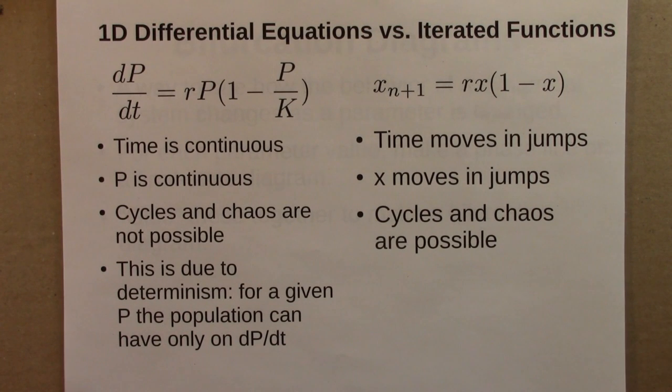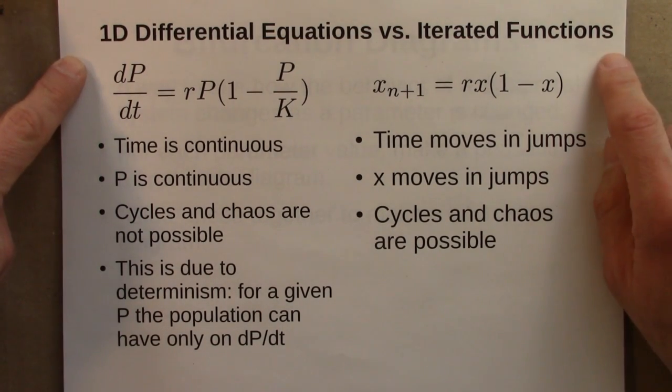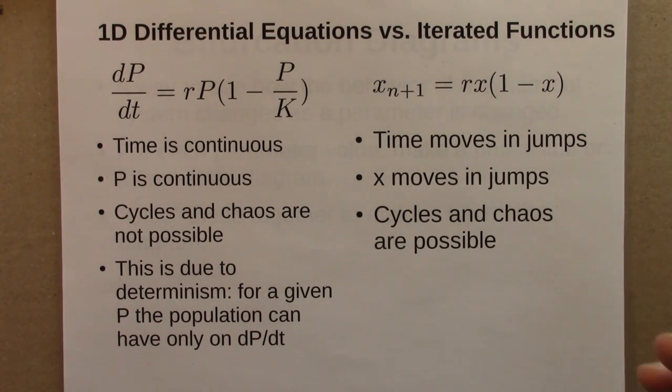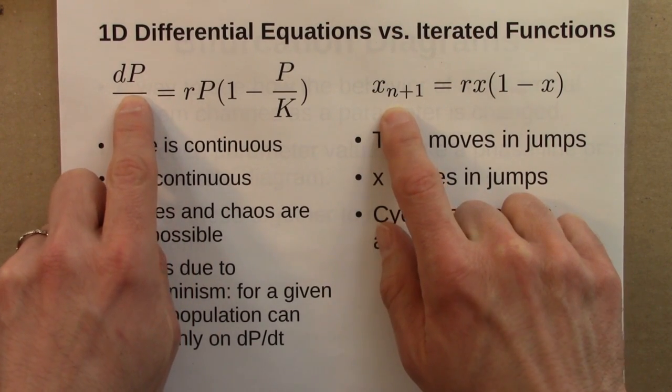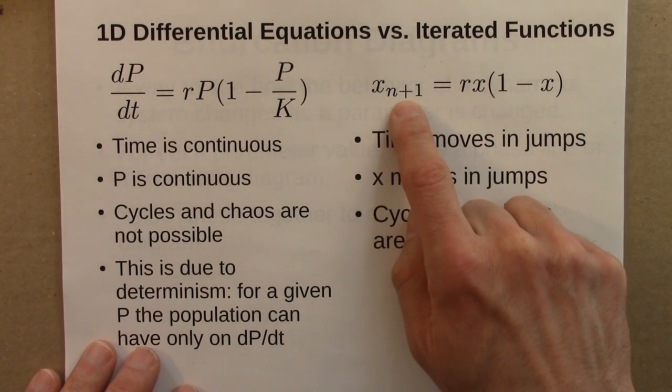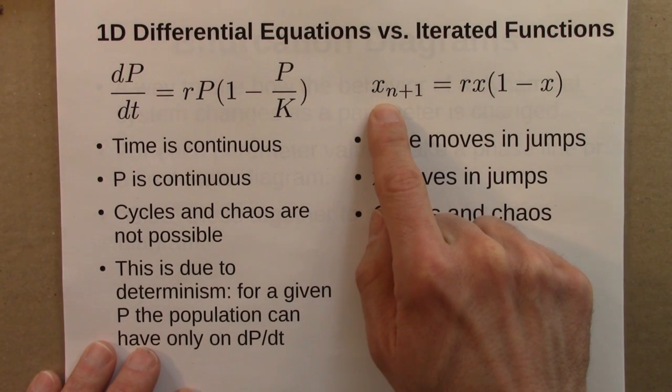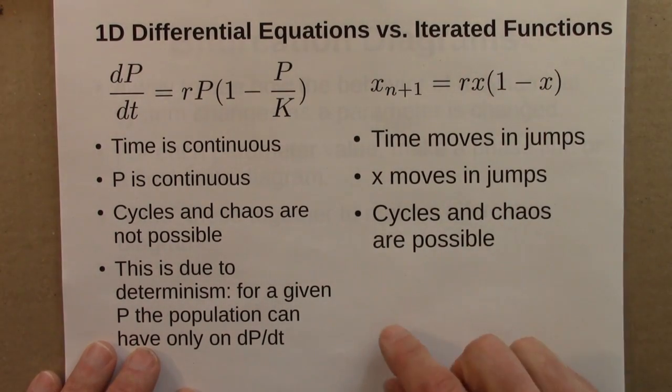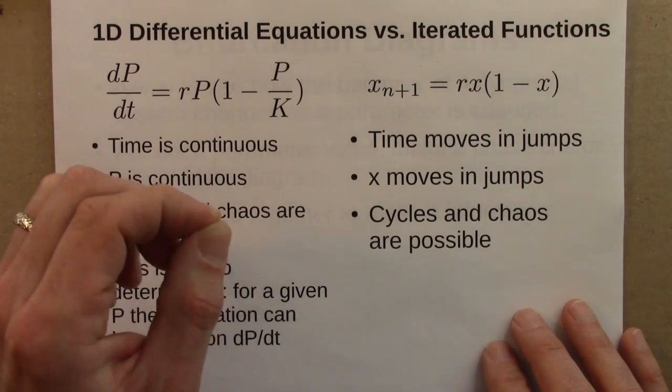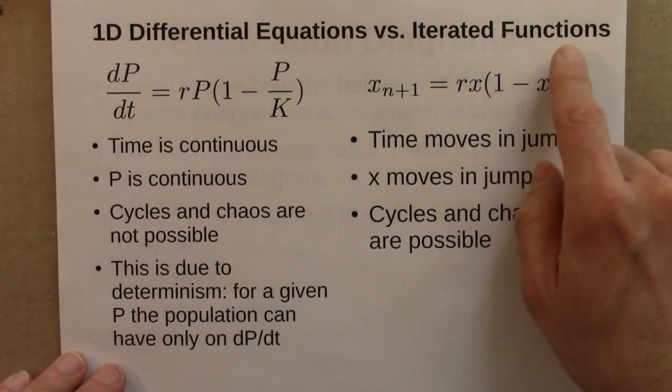Another point worth highlighting as we review and summarize is that we studied two types of dynamical systems: one dimensional differential equations and iterated functions. Although they're in some ways very similar, they're different and have some different mathematical properties that are important to note. For iterated functions, time moves in jumps. There's a value of x at step 1, at step 2, at step 3, but we don't really think about there being a value at time 1.2. Time moves in jumps, step 1, step 2, step 3, and x moves in jumps too. x could go from 0.6 to 0.4 and there's no sense that it has to slide through all the intermediate values between 0.6 and 0.4. It just jumps. As a result, cycles and chaotic behavior is possible for one dimensional iterated functions.